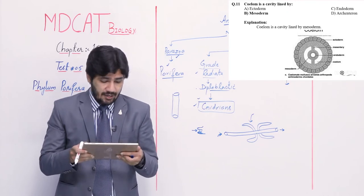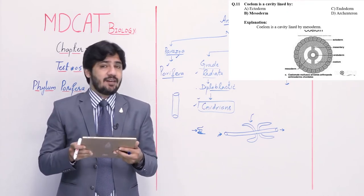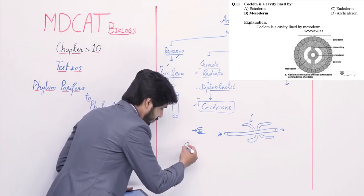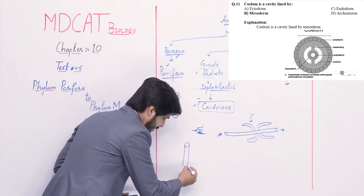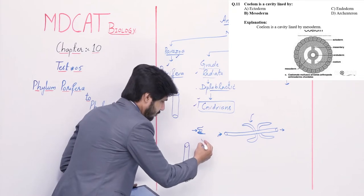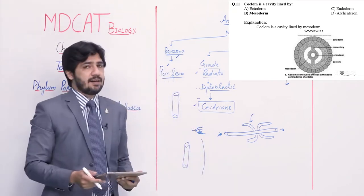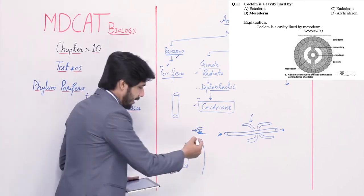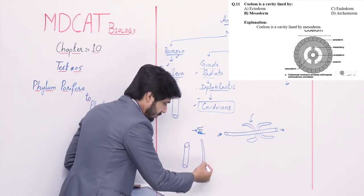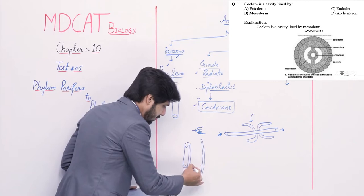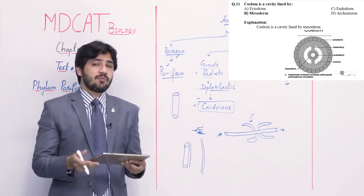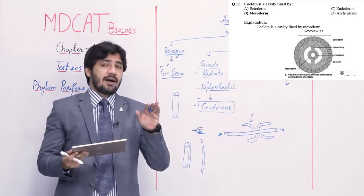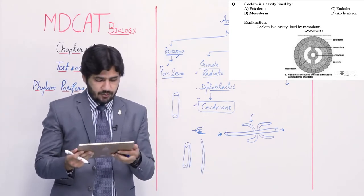Question number 11: coelom is a cavity lined by — alpha ectoderm, beta mesoderm, charlie endoderm, and delta. The coelom cavity has gut lining on one side and body internal lining on the other. When both sides are lined by mesoderm, it is called true coelom or true body cavity. So right option is beta — mesoderm.